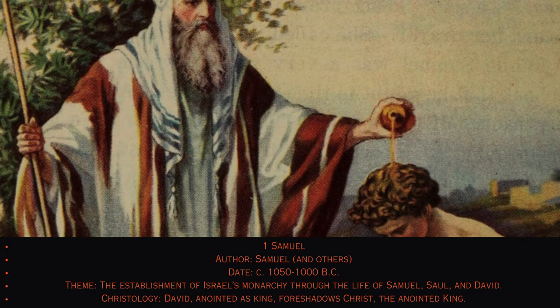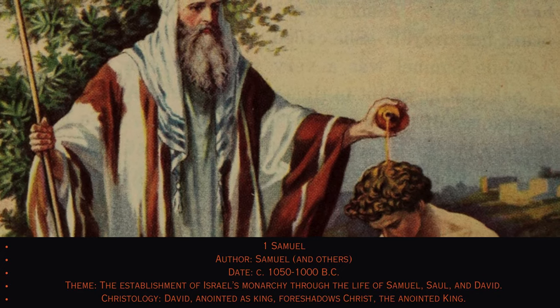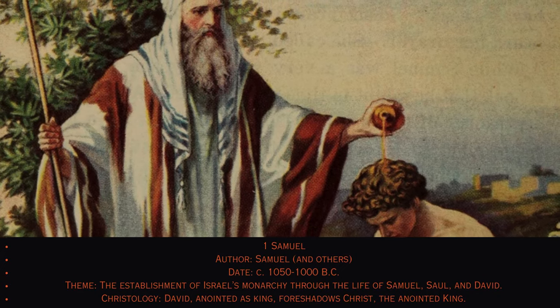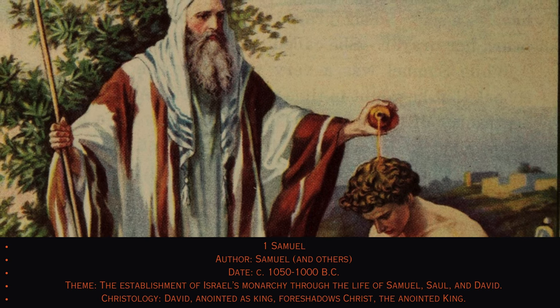9. 1 Samuel. Author: Samuel and others, circa 1050–1000 B.C. Theme: The establishment of Israel's monarchy through the life of Samuel, Saul, and David. Christology: David, anointed as king, foreshadows Christ, the anointed king.